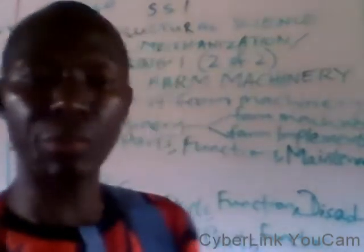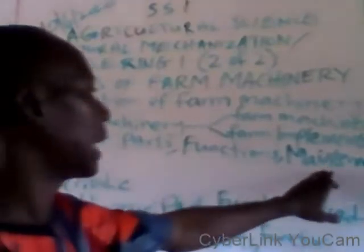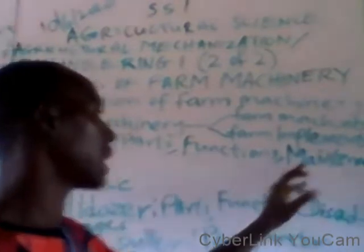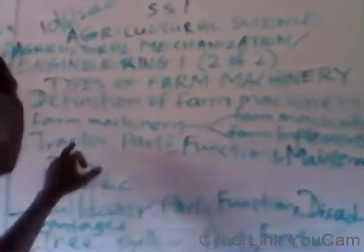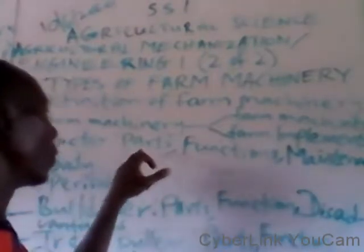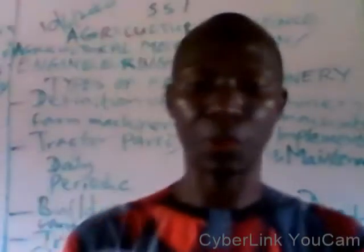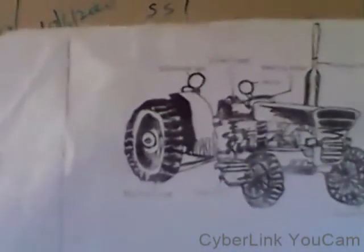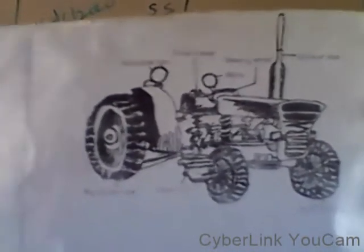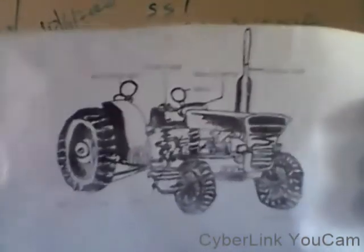Let us look at the tractor. I will show you an example of a tractor. We are going to study the parts, the function, and the maintenance of the tractor — the daily maintenance and the periodic maintenance. First, let us know the parts of a tractor. This is an example of a tractor. The tractor has four wheel rubber tires.